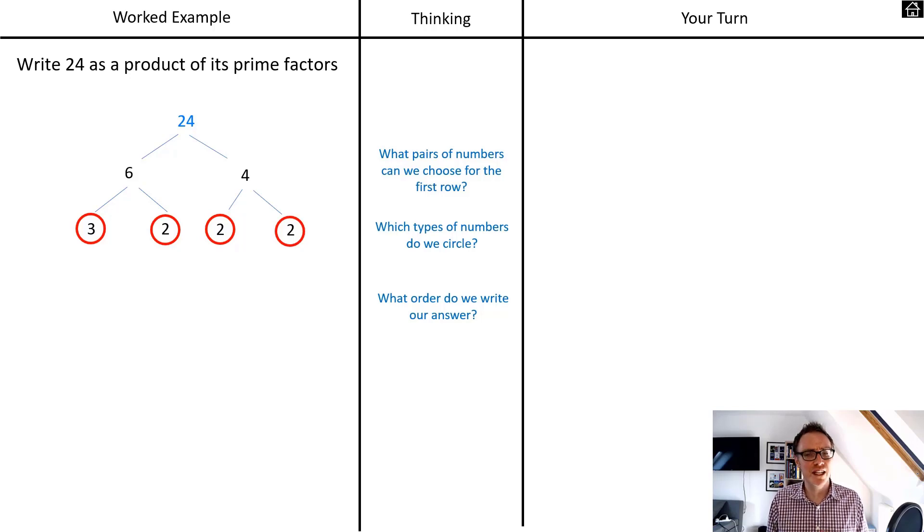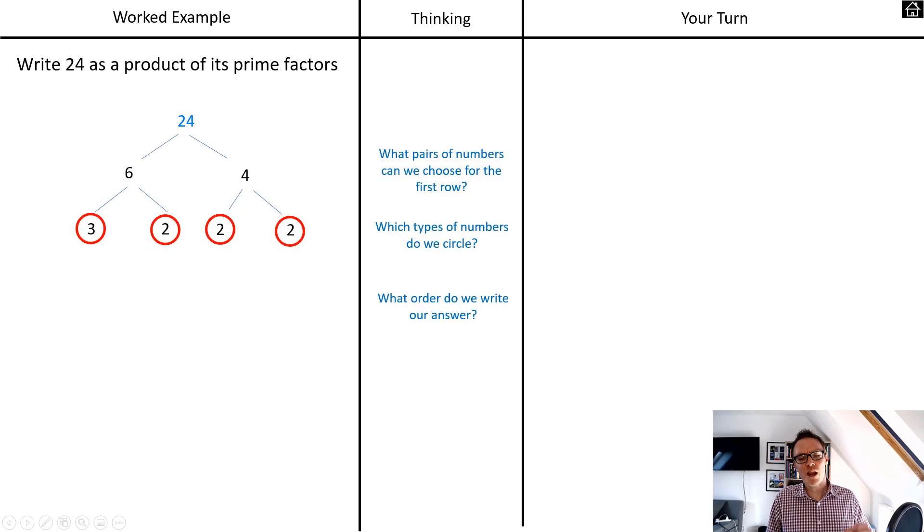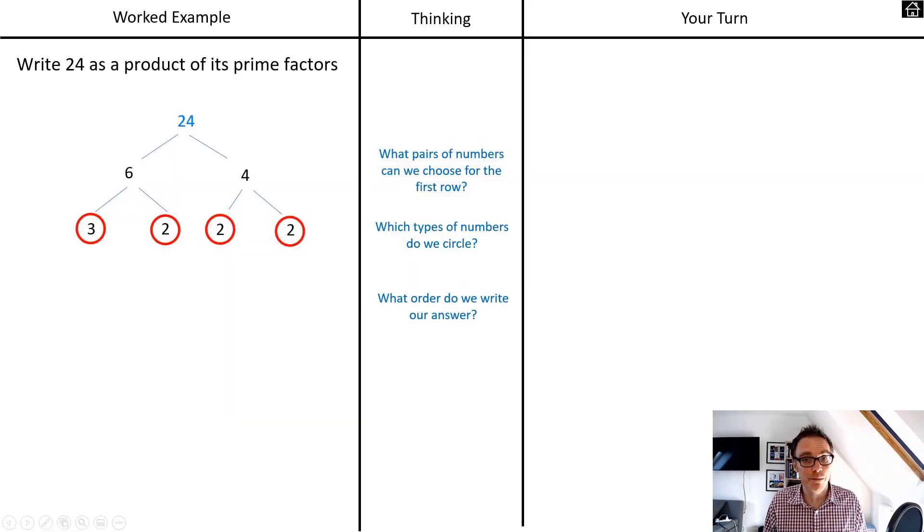One of the best things I've seen if teachers do get kids to copy things down is they copy down the worked example, but then what they ask the students to do is to annotate round the worked example their answers to their thinking prompts. And that way, the copying down is a bit more of an active process. It's not just blindly copying things down. It's copying things down, but then thinking. So why did we choose the six and four? Could we have chosen some other numbers? Why do we circle our answers? Copying down the worked example and annotating it with answers to thinking prompts, I think works quite well. But I'll leave that for you to decide.